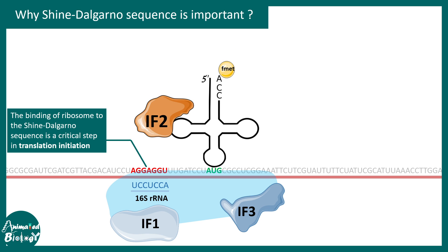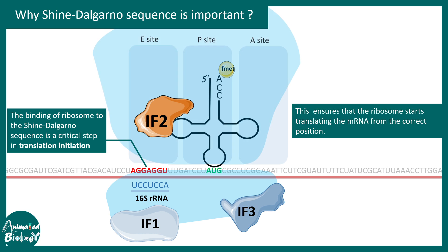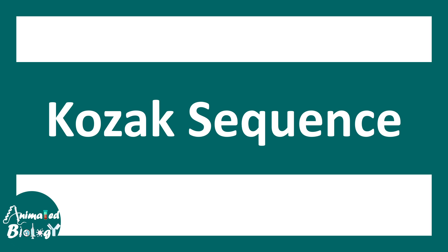It ensures the initiator tRNA can locate the start codon in a more proficient way. It ensures the ribosome starts translating the mRNA from the correct position, which really improves the precision of this procedure.